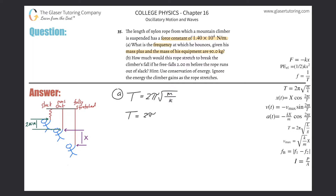The mass is 90 kilograms and the force constant is 1.4 times 10 to the 4th. Plugging into the calculator: 2π times the square root of 90 divided by 1.4 times 10 to the 4th.